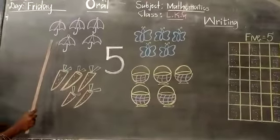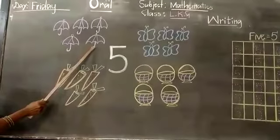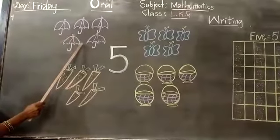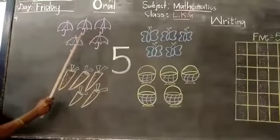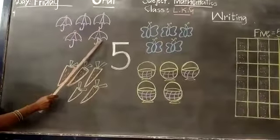See the board children. How many umbrellas are there? There are 5 umbrellas. 1, 2, 3, 4, 5. Very good.